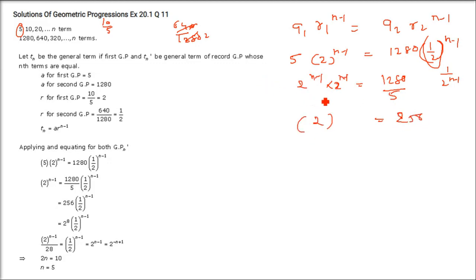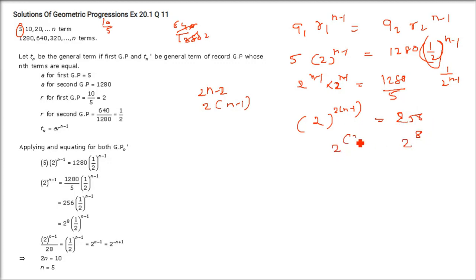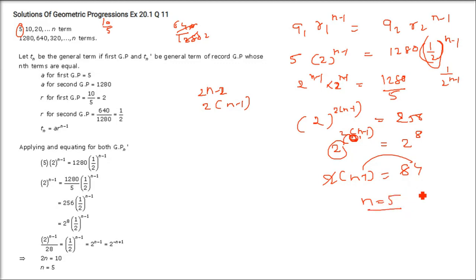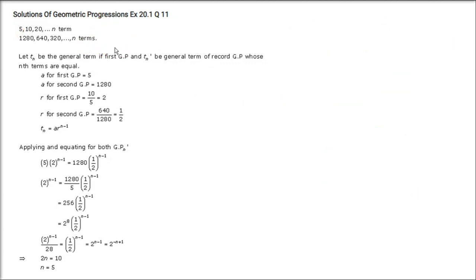This gives 2^(2n−2) = 2^8, so 2(n−1) = 8, meaning n−1 = 4 and n = 5. Therefore, the 5th term of both GPs is equal.